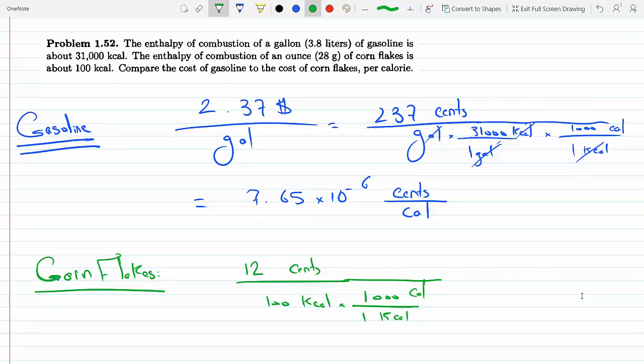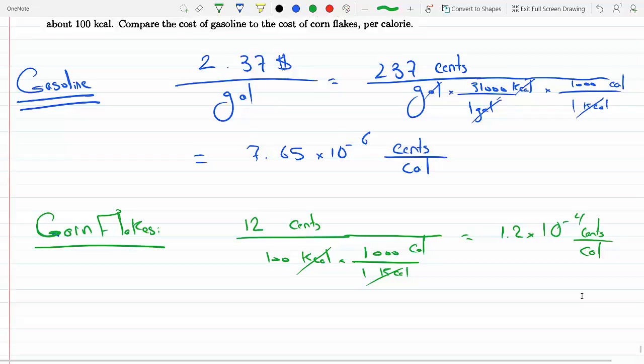This will turn out to be 1.2 times 10 to the minus 4 cents per calorie, whereas for gasoline it's 7.65 times 10 to the minus 6.